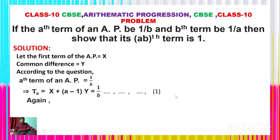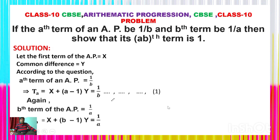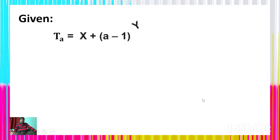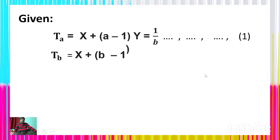Again, given that the bth term of the AP is 1/a, it means t_b = x + (b−1)y = 1/a. So what is given: t_a = x + (a−1)y = 1/b, and t_b = x + (b−1)y = 1/a.